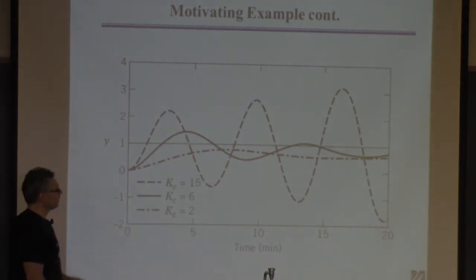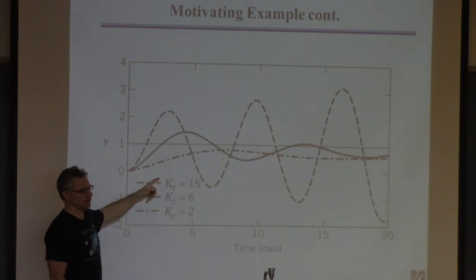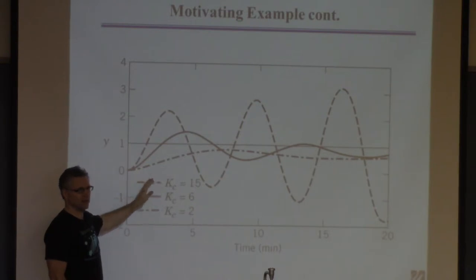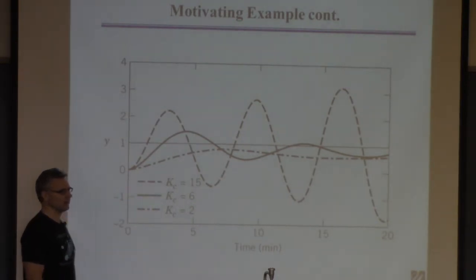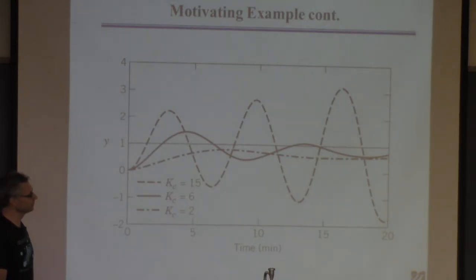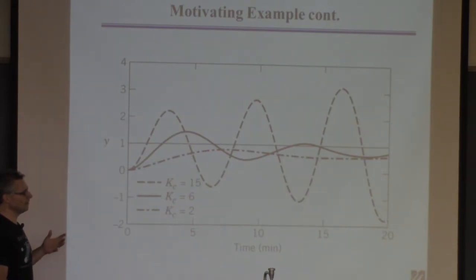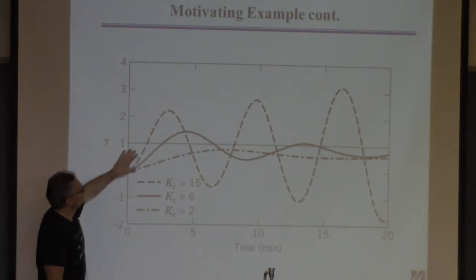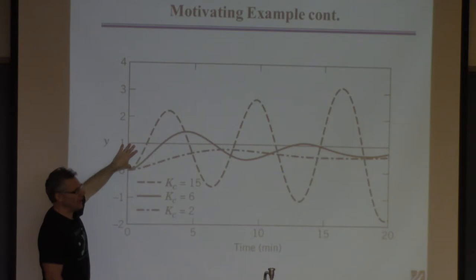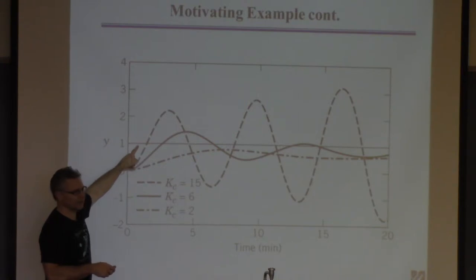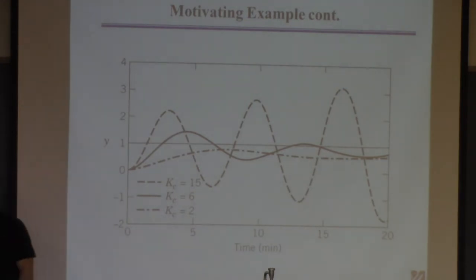The idea is: if you find the critical value — say it's 12.6 — values above that are unstable, so you limit your search for good KC values to things below that. Stability is a necessary condition for the system to behave well, but not sufficient. Even KC=2 gives slow, oscillatory response that won't reach the set point without integral action — but at least it's stable. It's a minimal requirement.